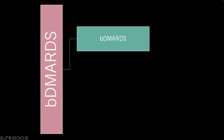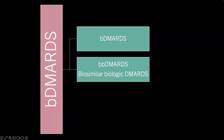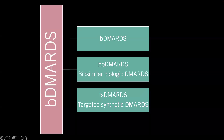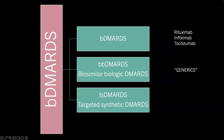Biological DMARDs can also be subdivided into conventional biological DMARDs, biosimilar biological DMARDs, or targeted synthetic DMARDs. Conventional biological DMARDs include drugs like rituximab, infliximab, and tocilizumab. Biosimilar biological DMARDs are essentially generics of biological DMARDs, regulated stringently to show biosimilarity to the original registered medication. Targeted synthetic DMARDs include tyrosine kinase inhibitors like baricitinib and tofacitinib.